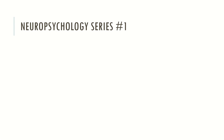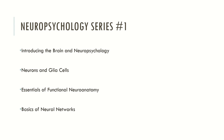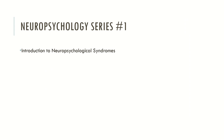Now let's see the topics related to this new neuropsychology series here in MindBrainTalks. The first is Introduction to the Brain and Neuropsychology. The second is Neurons and Glial Cells. The third is Essentials of Functional Neuroanatomy. The fourth is Basics of Neuronetworks. Introduction to Neuropsychological Syndrome. Neuropsychology Kingdoms. Neurocognitive Functions. Executive Functions. Complex Attention.